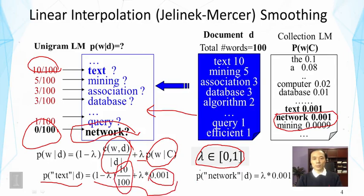We can also see the word network, which used to have a zero probability, now is getting a non-zero probability of this value. That's because the count is going to be zero for network here, but this part is non-zero. And that's basically how this method works.